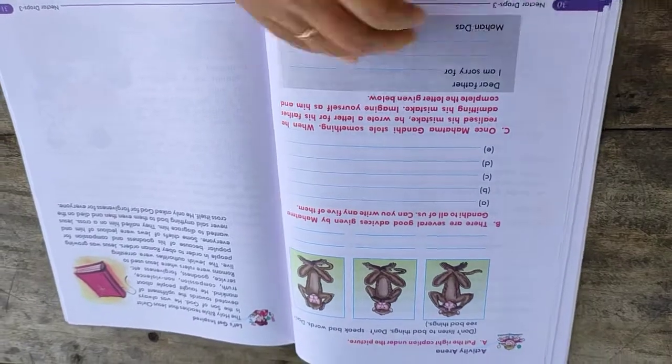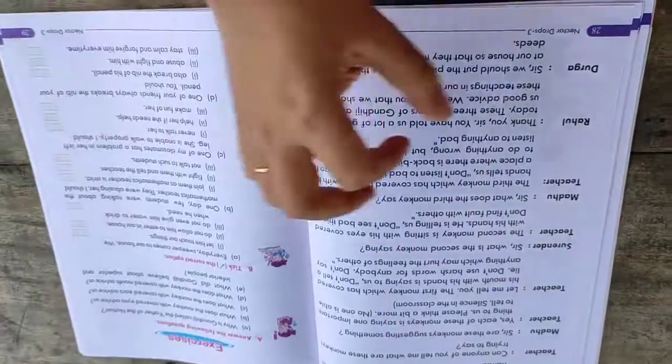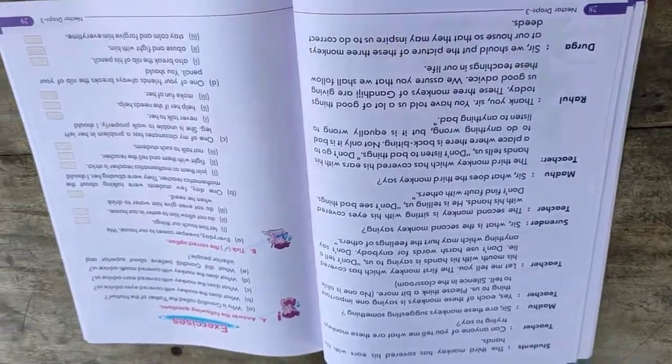There are several good advices given by Mahatma Gandhi to all of us. Can you write any five of them? Try this. If you can't find five, write three, and you can ask me about the remaining two. If there's any problem, please let me know. So kids, that's all for today. We'll meet next week. I hope you enjoyed the class. Bye for now.